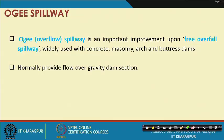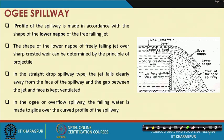Normally, it provides flow over the gravity dam section. The profile of Ogee Spillway is made in accordance with the shape of the lower nappe of free falling jet. This is the kind of structure in the Ogee Spillway — here is the upper nappe, the surface of the water profile, and the lower nappe which touches the spillway structure, and this is the crest of the spillway.